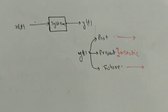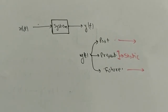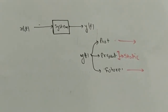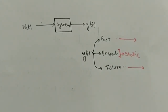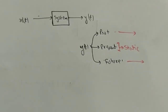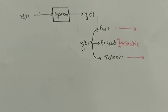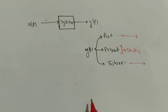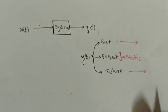A static system is a system for which the output depends only on present values of the input. A dynamic system is a system in which the output depends on past or future values of the input at any instant of time.